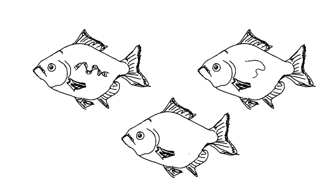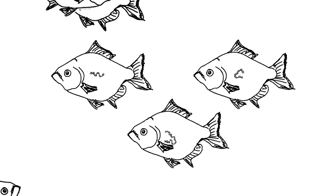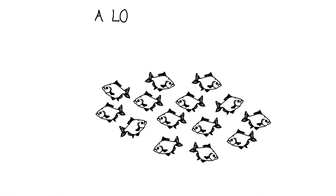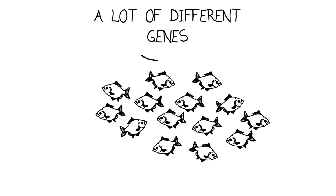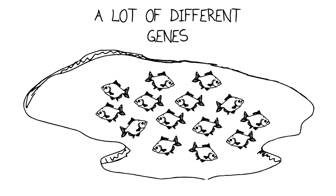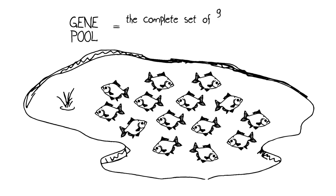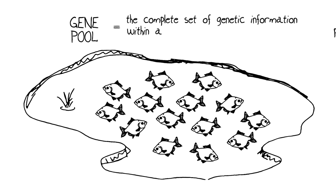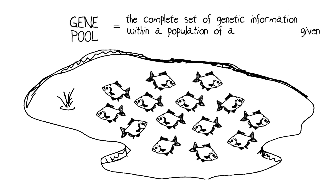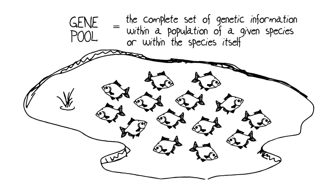Just like those ships, each organism is unique in its genetic information. If we consider all the individuals in the population, we have a lot of different genes. Collectively, these are known as the gene pool — the complete set of genetic information within a population of a given species, or within the species itself.